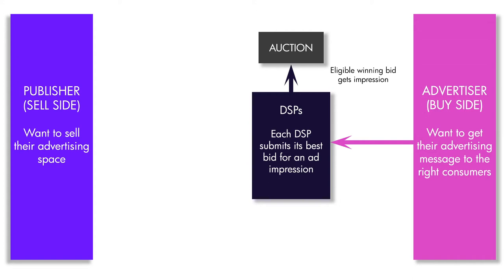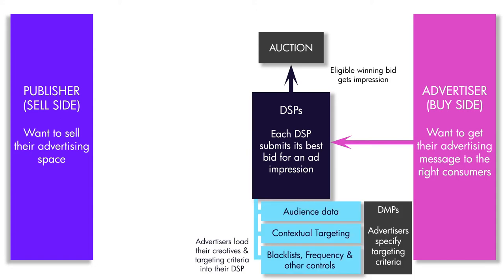The demand side platform, or DSP, is a tool that we use to buy media. It first gives us access to all inventory that's out there, then gives us access to data — the advertiser's own first-party data, plus all other data sold on the marketplace — so we can define targeting. We then program the DSP with algorithms against the KPIs we want to achieve, and the DSP decides on every impression offered to it whether to buy it and at what price.